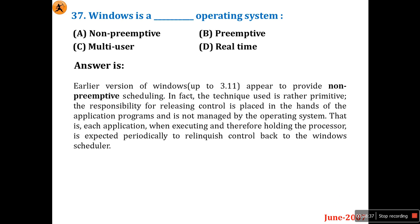Earlier versions of Windows up to 3.11 used non-primitive scheduling — once execution started, the process would not move to the next without completing. The responsibility of releasing control was placed in the hands of application programs, not managed by the OS. Each application, when executing and holding the processor, was expected periodically to relinquish control back to the Windows scheduler. Nowadays the OS uses primitive scheduling.